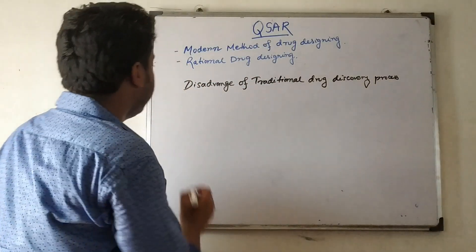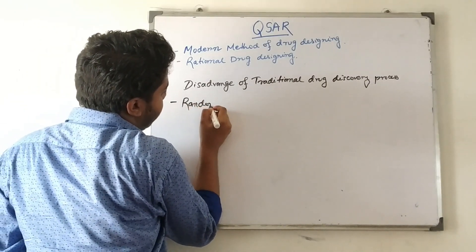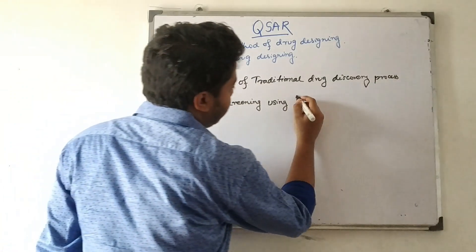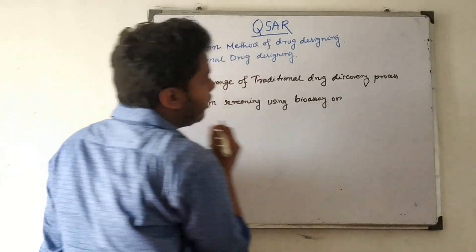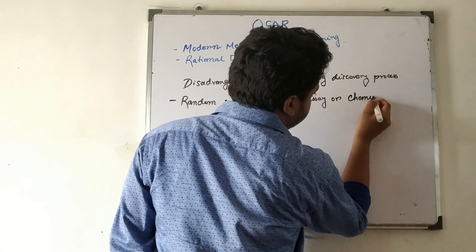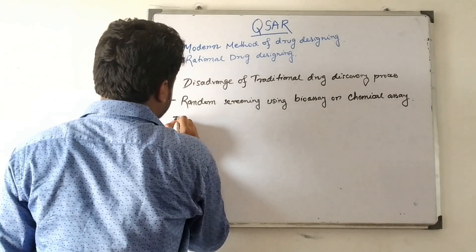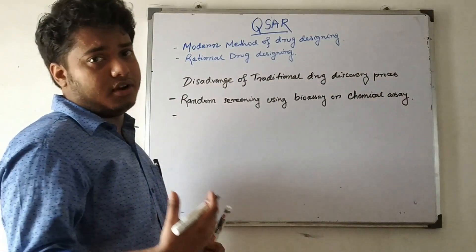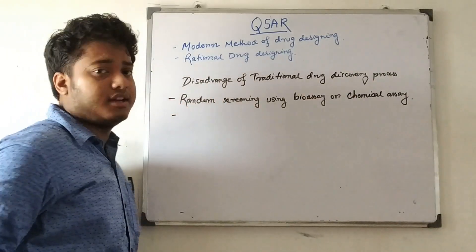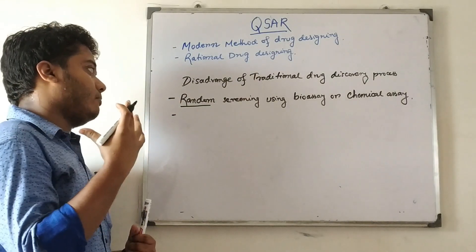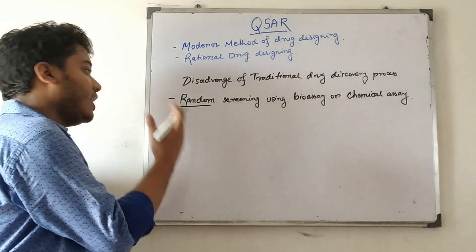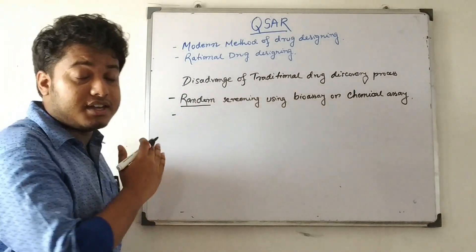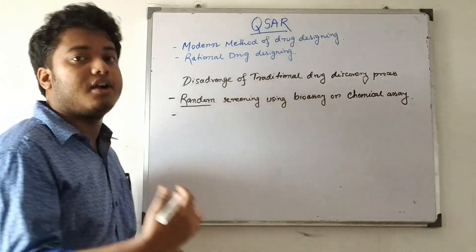Traditionally, drugs were discovered by random screening methods using bioassay or chemical screening. In the random screening method, there is a chance of getting the desired drug, but there is also a great amount of uncertainty. Selecting a drug candidate by random screening is a very tedious and hard-working process.